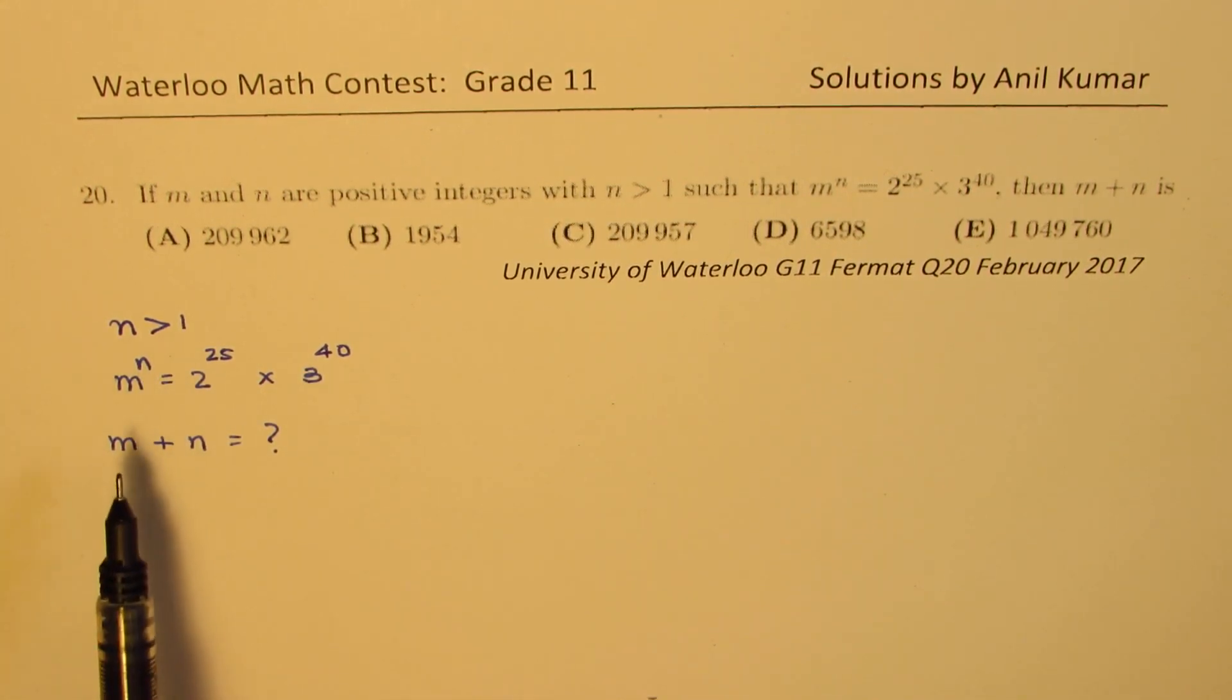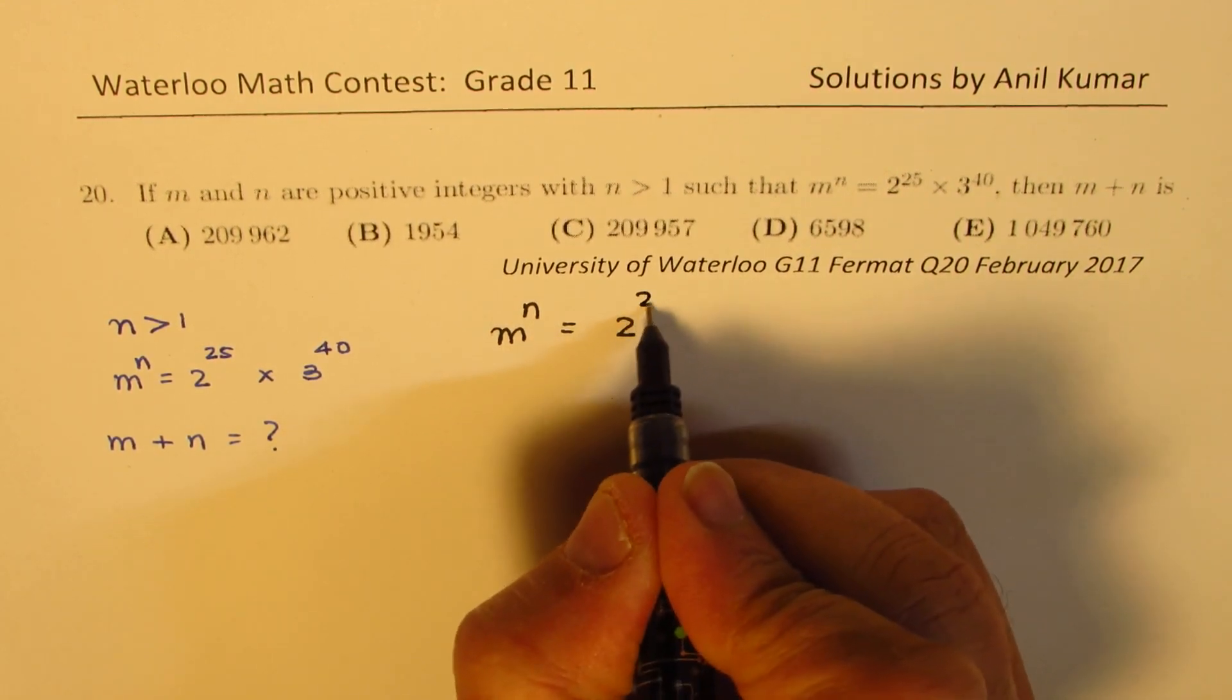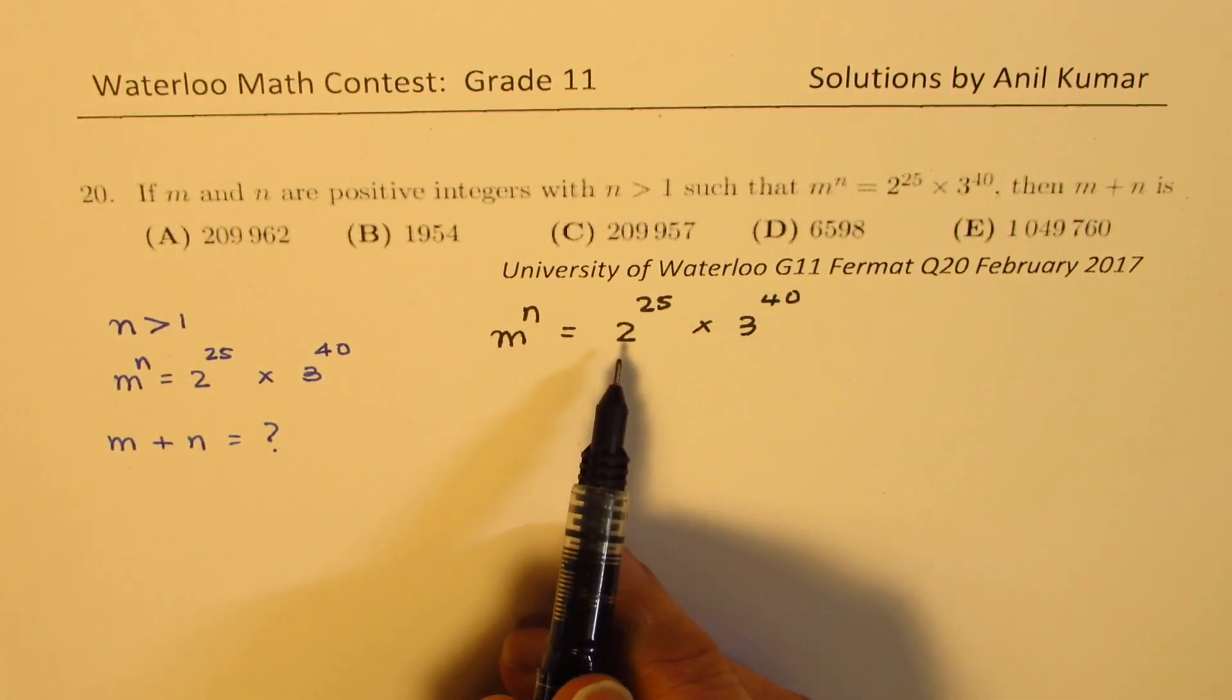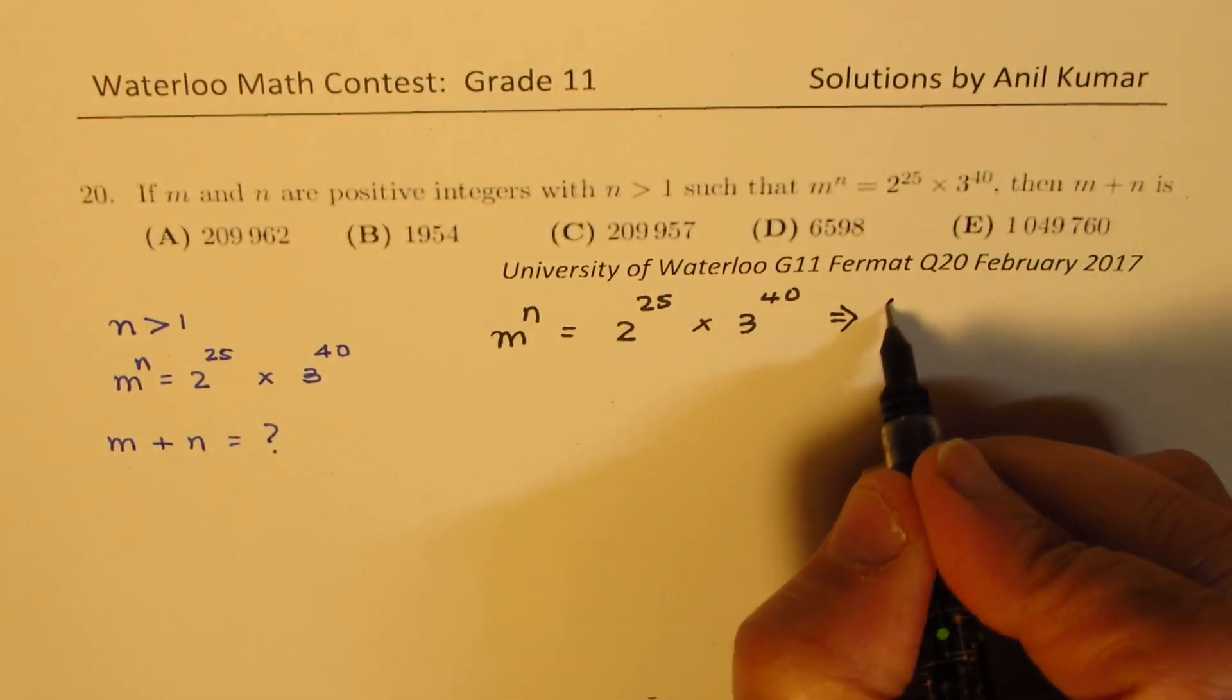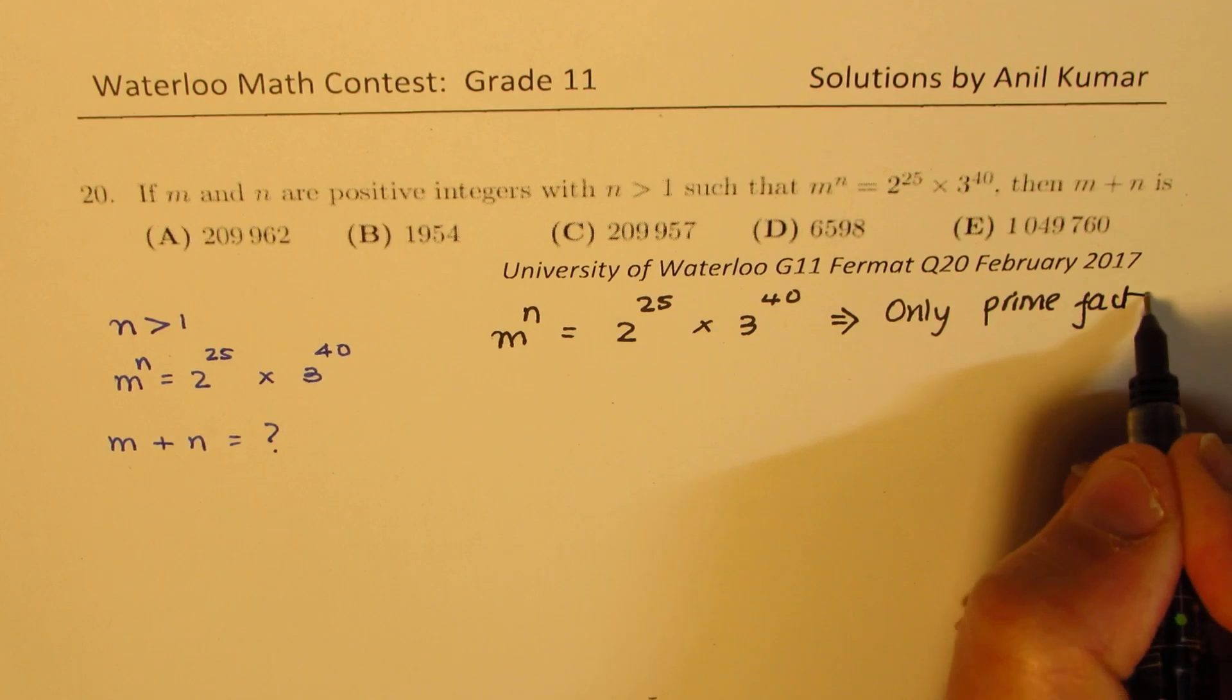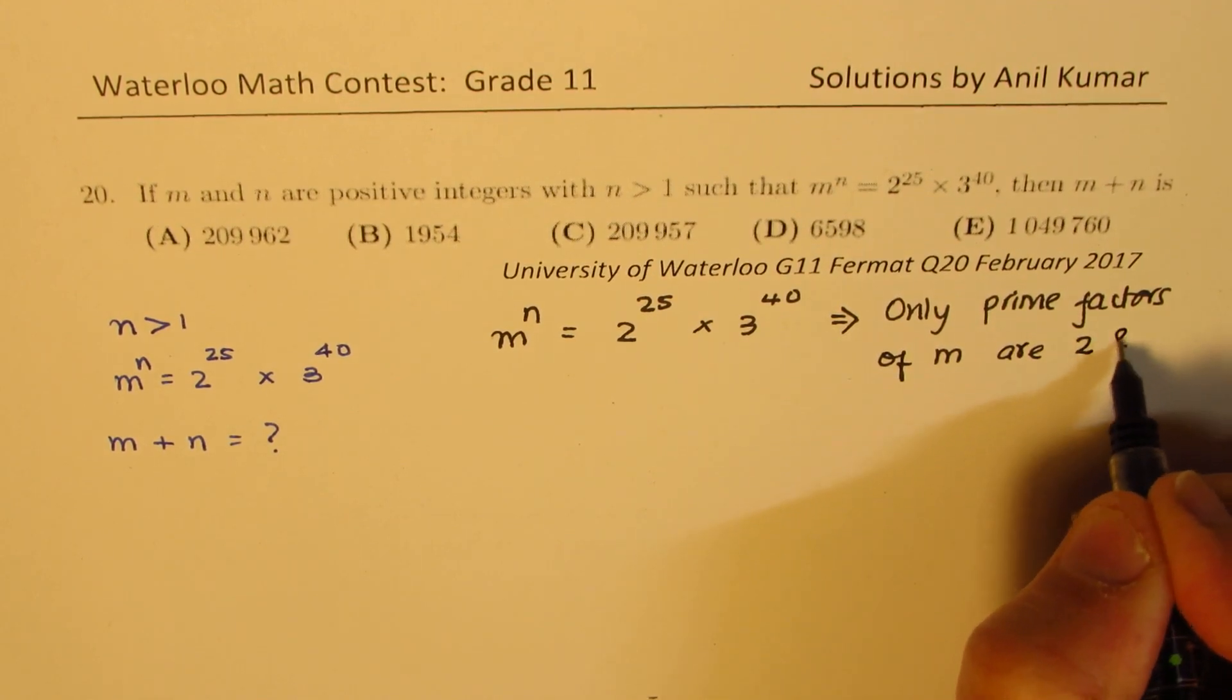So we are talking about positive integers. And what we notice here is that when we say that m^n is equal to 2^25 times 3^40, it means that only 2 and 3 are the prime factors of m. So that basically implies that only prime factors of m are 2 and 3.